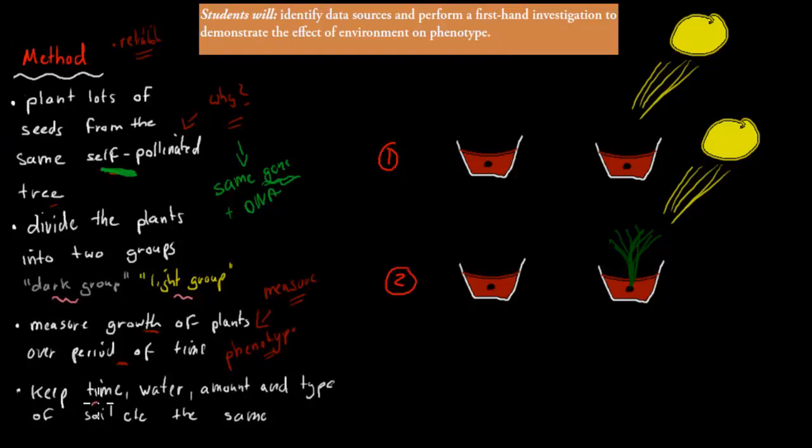We also want to make sure we keep some stuff the same. We keep the time the same, the time that both of these are exposed, the growing time that they're given. We keep the amount of water the same, we keep the amount and type of soil the same, et cetera. The only thing really changing is that one will get no light and the other one will get enough light. That's the only factor we're changing.